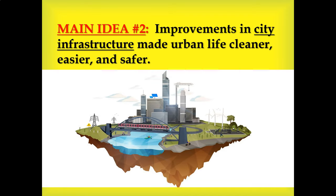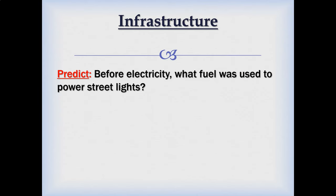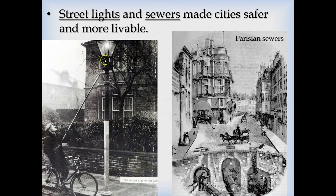Now let's look at some improvements in city infrastructure, beginning with street lights. Street lights today are powered by electricity, but before electricity, what powered them? In the earliest days it was natural gas — someone would come by and light the gas lamps. This wouldn't give you a lot of light, but it certainly gave you some. Any light at all in the street makes the city safer and people more confident to go outside.